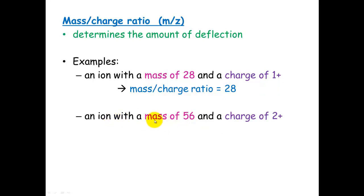If you've got an ion, though, with a mass of 56 and a charge of 2 plus, your mass-to-charge ratio is going to be 28 as well. So they're both going to deflect by the same amount, but the masses are different. So it's really important that we consider the charge of that ion when we're looking at trying to work out what the mass of that ion is.